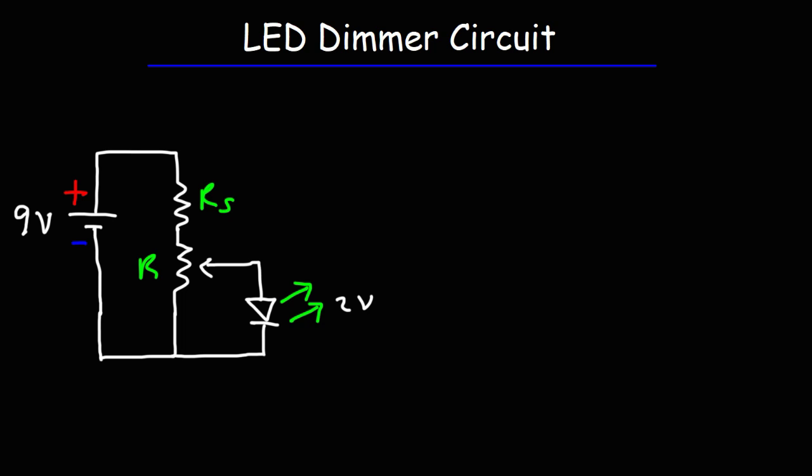The potentiometer is a variable resistor. You can tune it to control the resistance of the circuit. As the resistance of the circuit increases, the current flowing in the circuit decreases, and so the brightness of the LED will decrease.